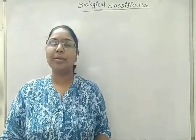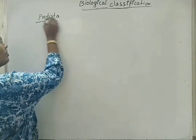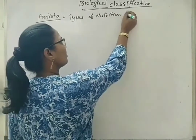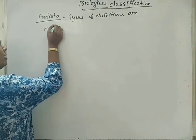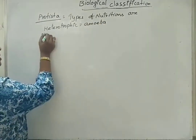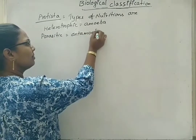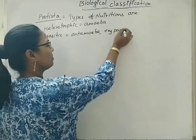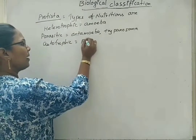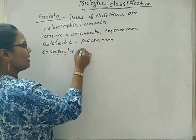Hello students. Now we will start with a new topic about mycota, means fungus. In case of protista, the types of nutrition we have seen are: first, heterotrophic, example is amoeba; parasitic, means by absorbing nutrients from the host, examples are Entamoeba, Trypanosoma, etc.; next, autotrophic, example is Paramecium; and also saprophytic, example is slime molds.